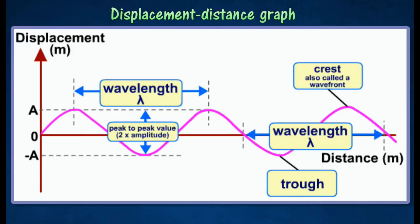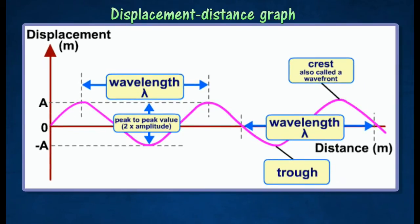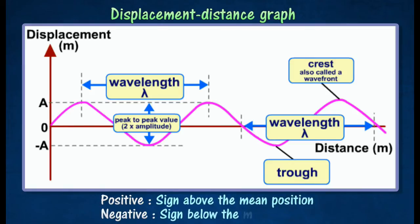The displacement in y-axis shows how far each particle has moved from the middle line or mean position. Displacement is positive when a sign is above the mean position and negative when it is below the mean position.